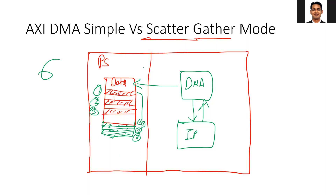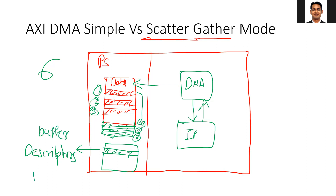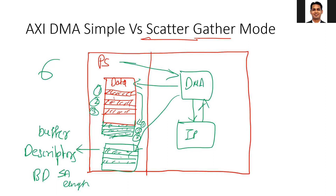So what I want to do is use another set of memory where I'll store descriptors — also called buffer descriptors (BD). In each BD, I describe the starting address, the length of the data, and so on. I write the corresponding BDs into this memory. Then, using the processor, I just tell the DMA that the BDs are stored at this location. The DMA reads the BDs, gets the information about the transfer from each BD, and performs the transfer as per that information.